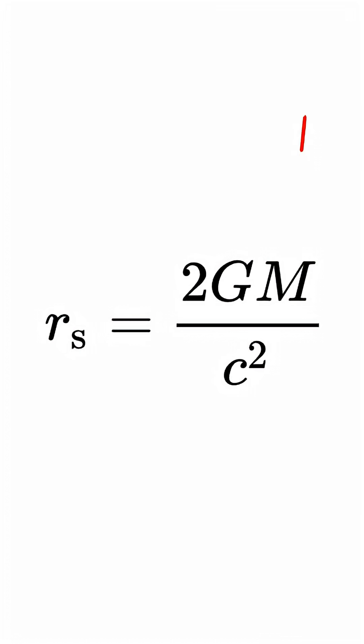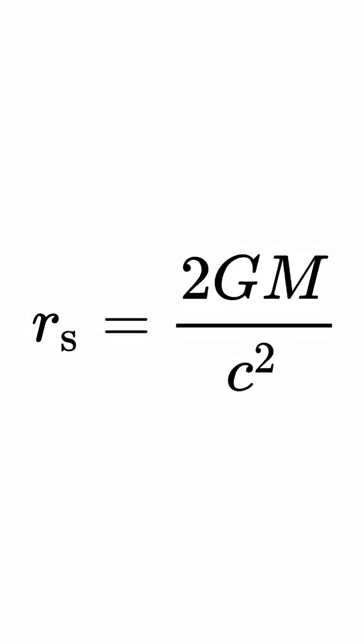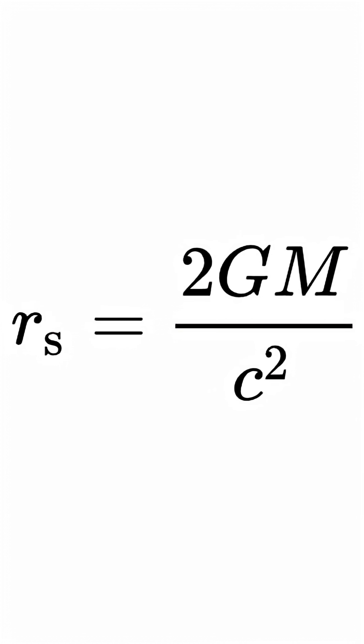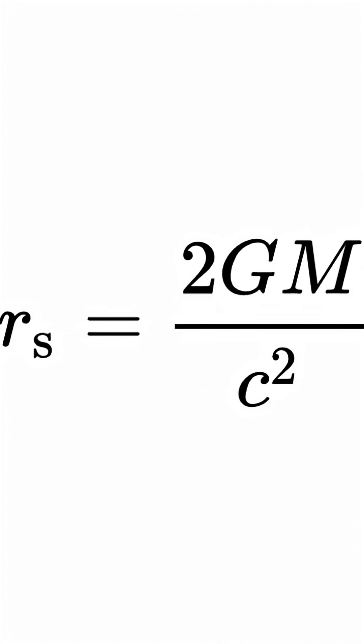As you can see, the smaller the mass, the smaller the required radius. However, we can actually transform this into an equation that, given any density, however small, gives us our critical radius.